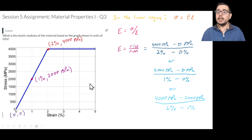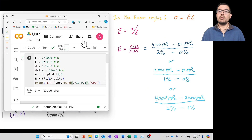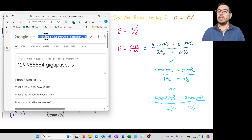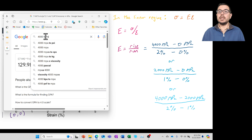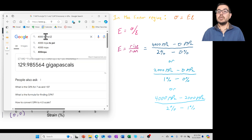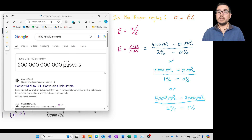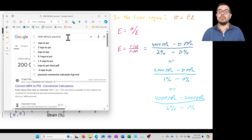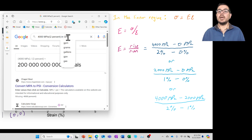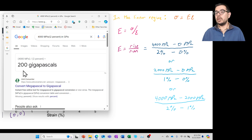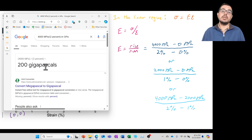Let's calculate the numeric value. Using Google, we enter 4000 megapascals divided by 2% and get a large number. Converting to gigapascals, that's 200 gigapascals. There's a good chance this material might be steel, since the elastic modulus of steel is typically around this value.